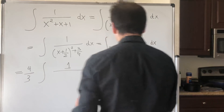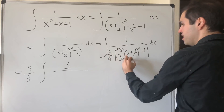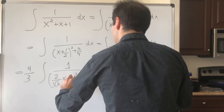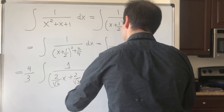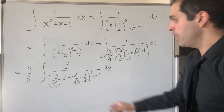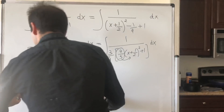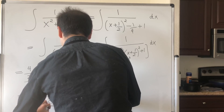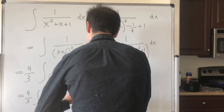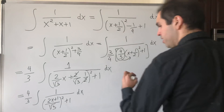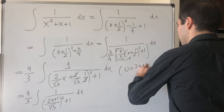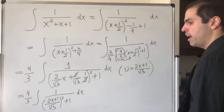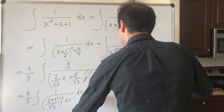So this becomes the integral of 1 over x plus one half squared plus three quarters, dx. Now we factor out three quarters from the denominator: one over three quarters times four thirds times x plus one half squared plus one, dx. Dividing by three quarters is like multiplying by four thirds, so we get four thirds times the integral of 1 over two over square root of 3 times x plus one over square root of 3, all squared plus 1, dx.